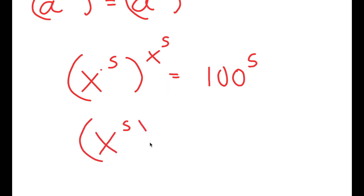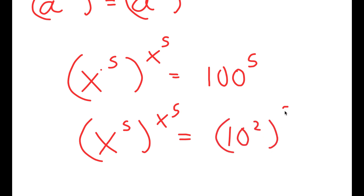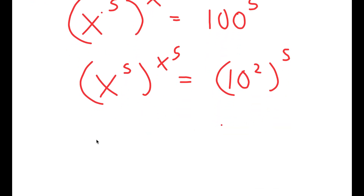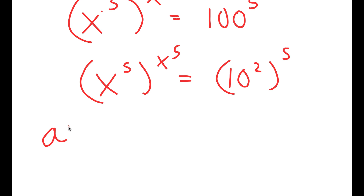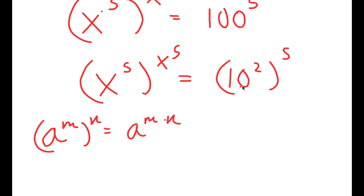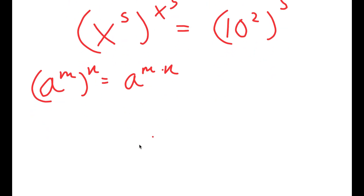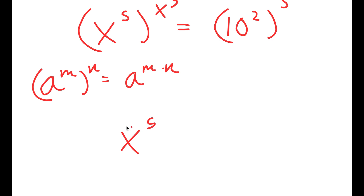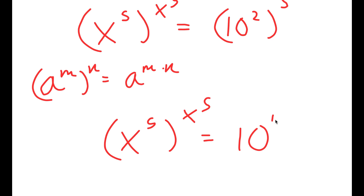Now, 100 I'm going to rewrite as 10 squared. So now I have 10 squared to the power of 5, and another property of exponents is that if I have something in the form a to the power of m to the power of n, this is equal to a to the power of m times n. So 10 to the power of 2 to the power of 5 equals 10 to the power of 2 times 5, which is 10 to the power of 10.